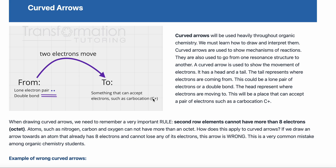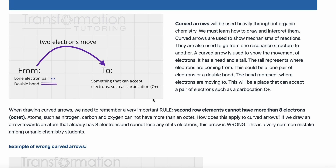There is a rule we really need to understand when it comes to drawing curved arrows, and it will be very important in drawing resonance. Second row elements — carbon, nitrogen, and oxygen on the periodic table — cannot have more than eight electrons. They cannot have an exceeded octet. So if you draw your curved arrow to a carbon that already has eight electrons and you don't take any electrons away, that is a wrong arrow.